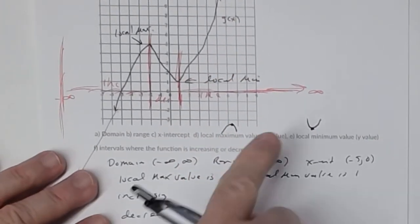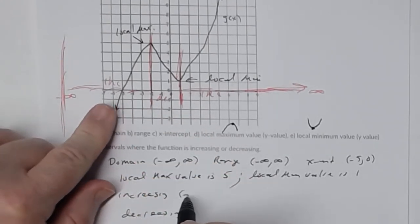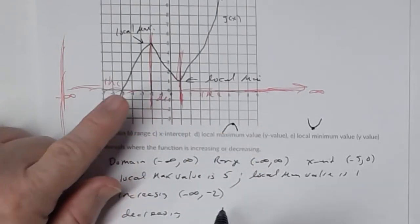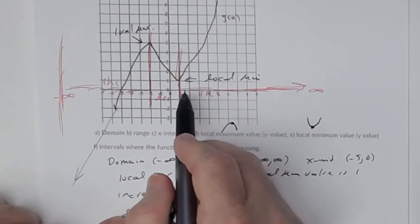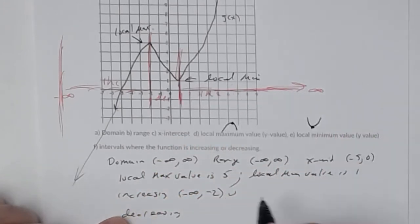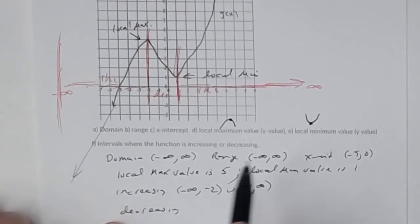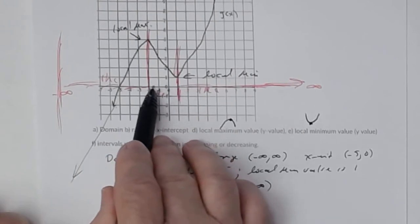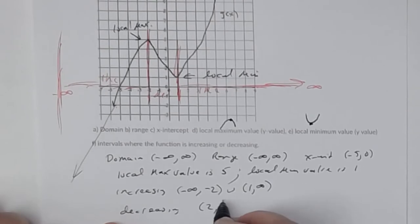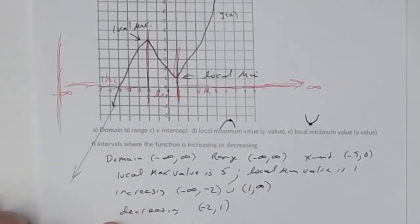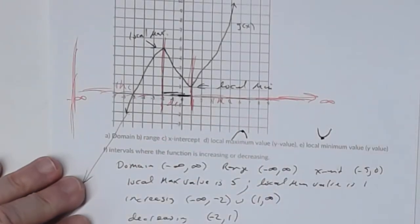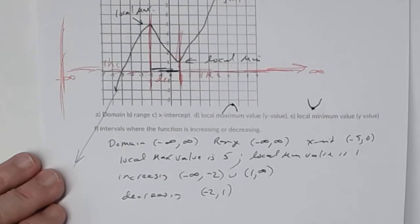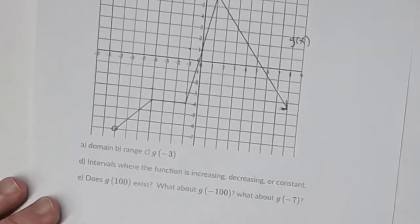Since there are two increasing intervals you use a union symbol. Increasing: open interval negative infinity to negative two, union, open interval one to infinity. Decreasing: open interval negative two to one. That was number 36.